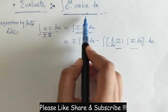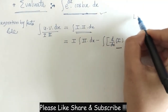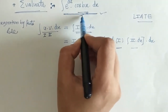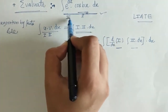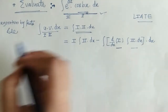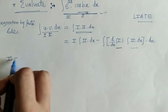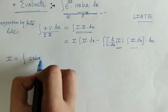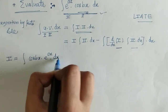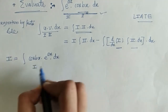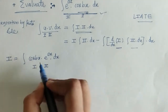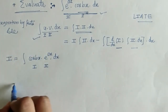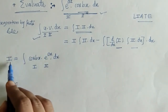We have to arrange the two functions using this rule. Here, cos(bx) is the first function and e^(ax) is the second function. So the given integral I is the integral of cos(bx) into e^(ax). This is our first function and e^(ax) is the second. Now we will apply the rule of integration by parts to evaluate this integral.